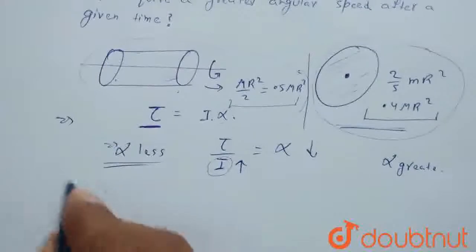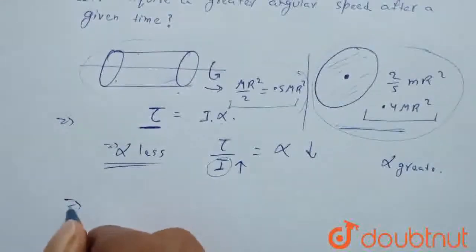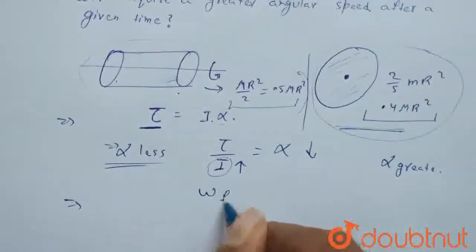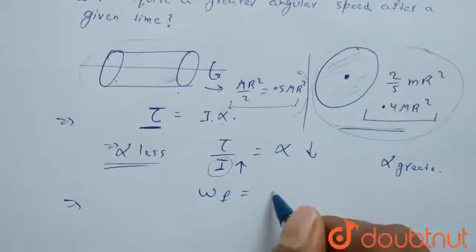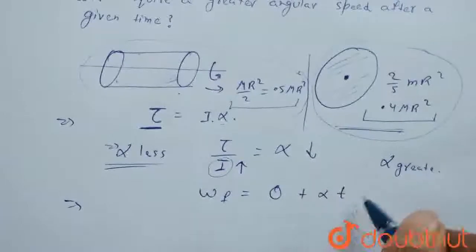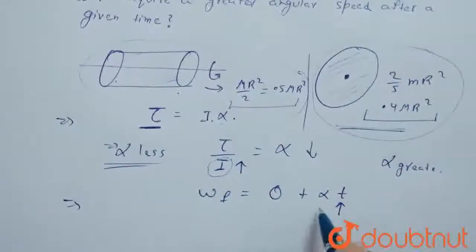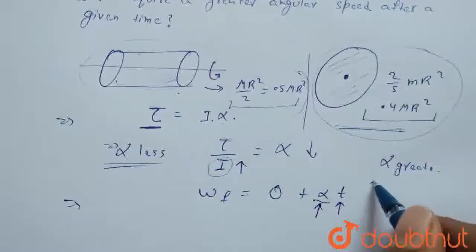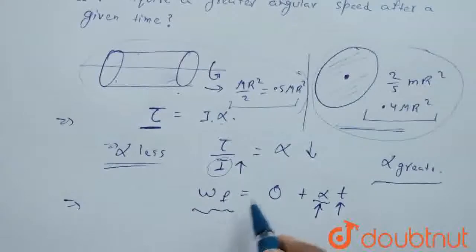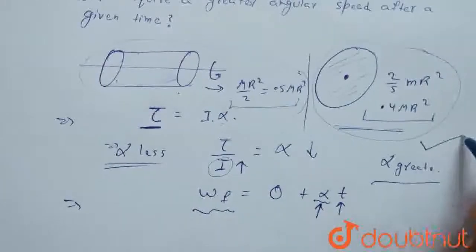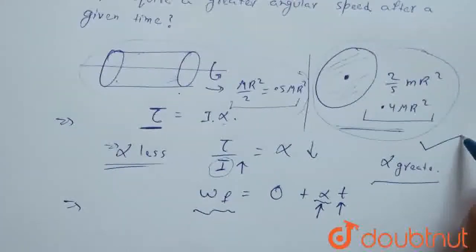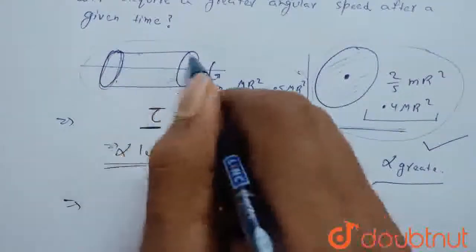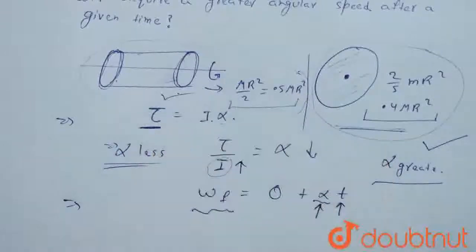What does this mean? As we know, we have to find angular speed after a given time. Angular speed final equals angular speed initial, which is zero, plus α times t. If the time duration is the same, then angular speed will directly depend upon α. So if α is greater, then angular speed will be greater. That's why the solid sphere will have greater angular acceleration after the same time rather than a cylinder. Thank you.